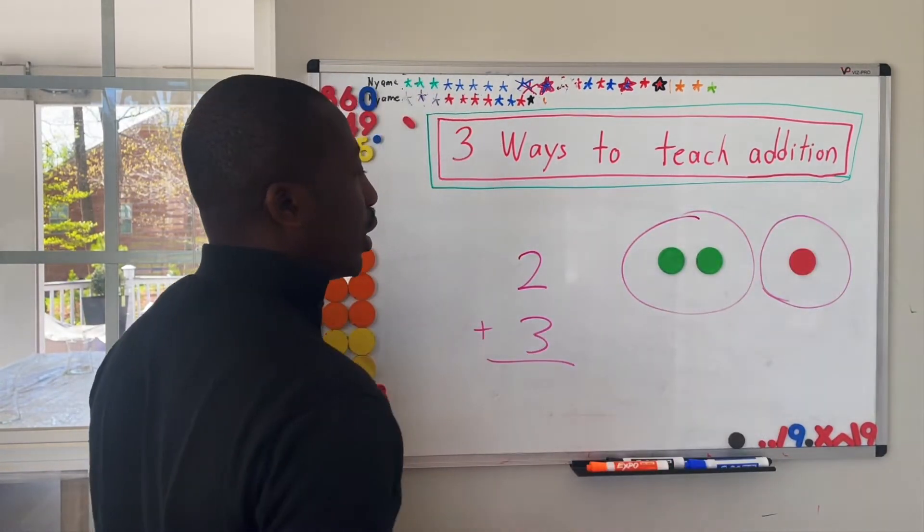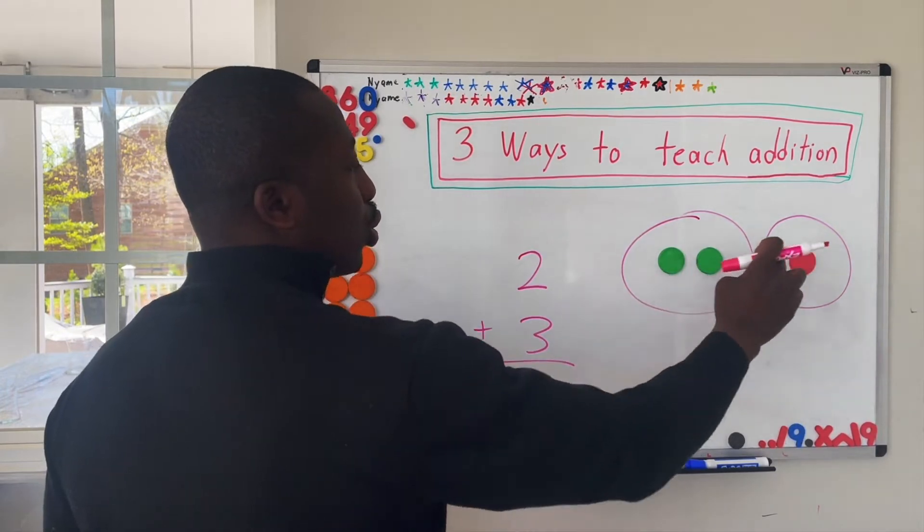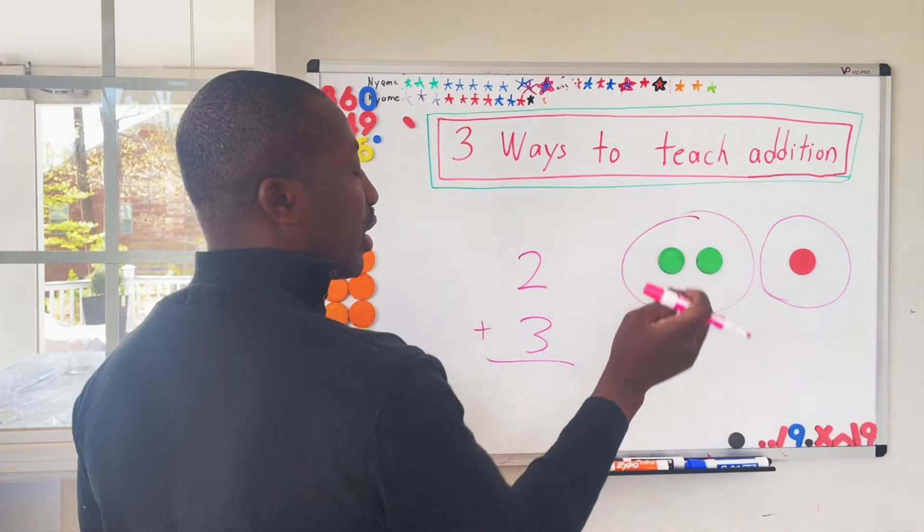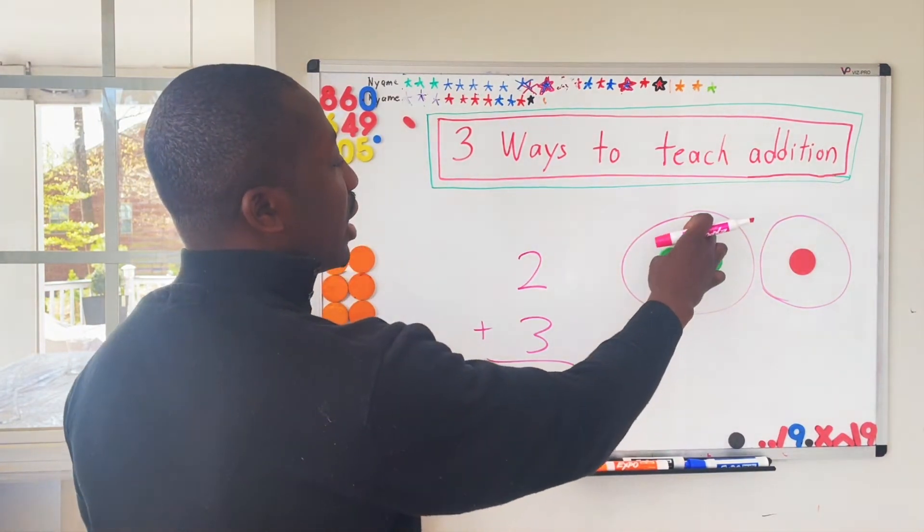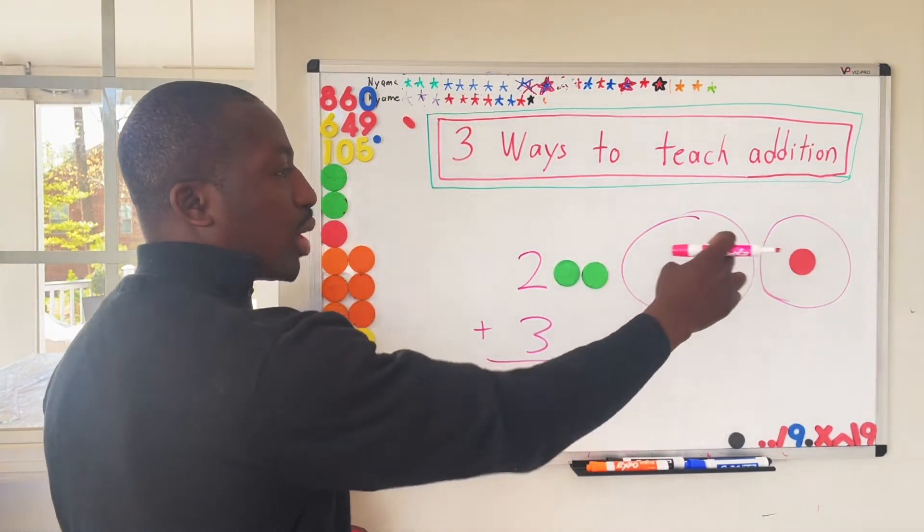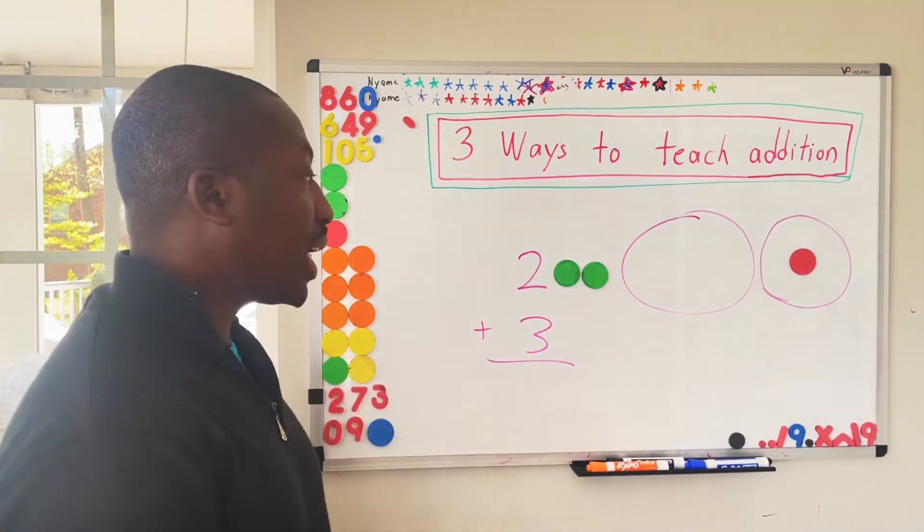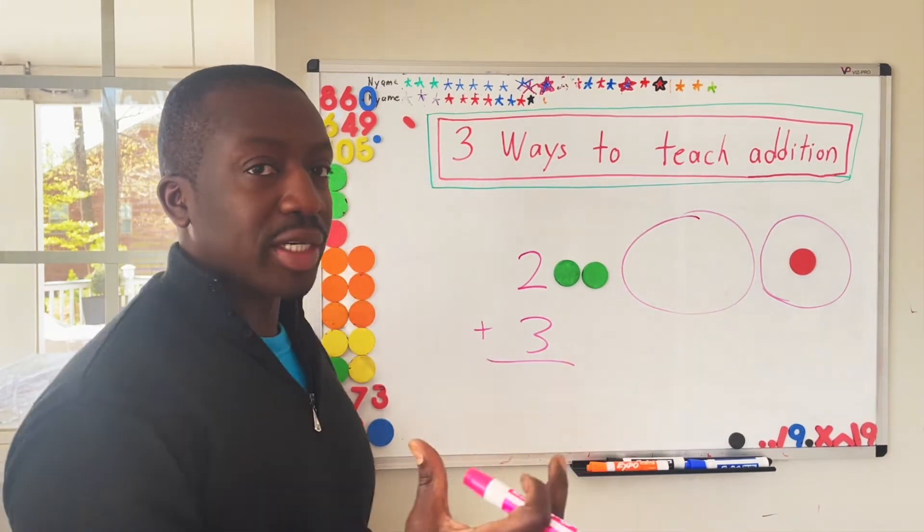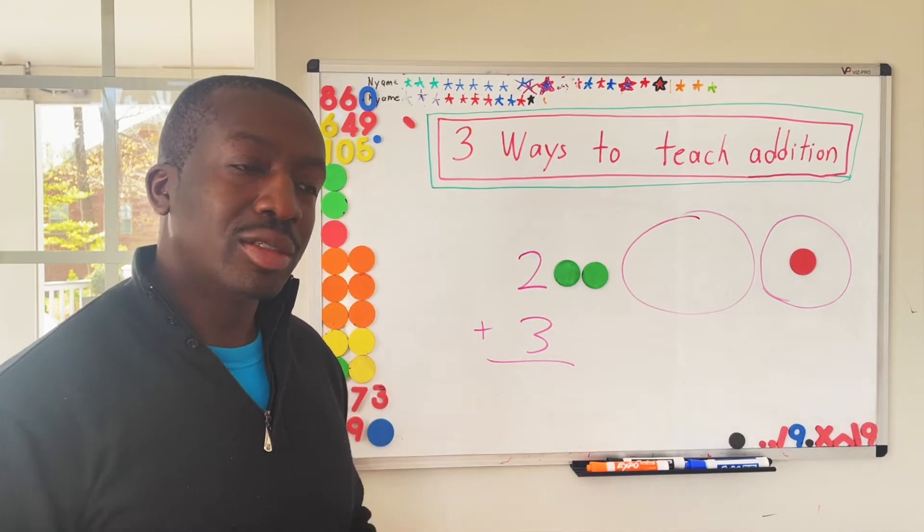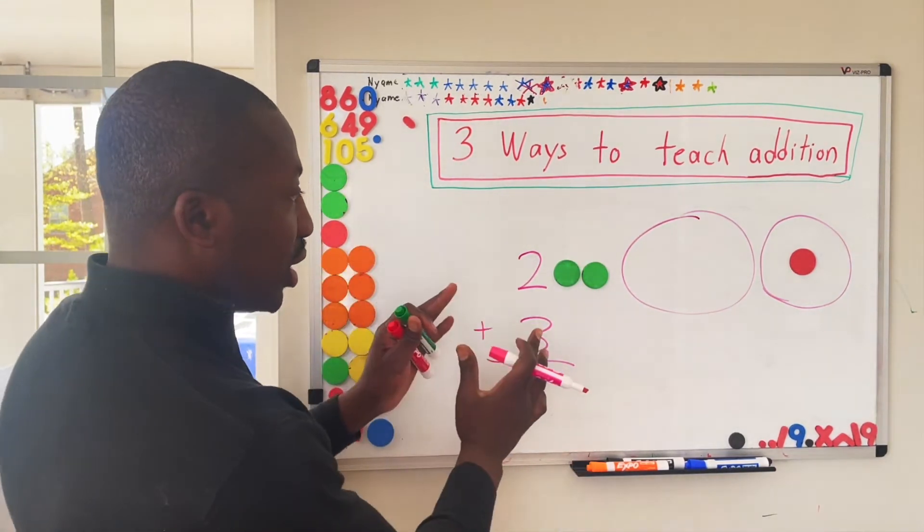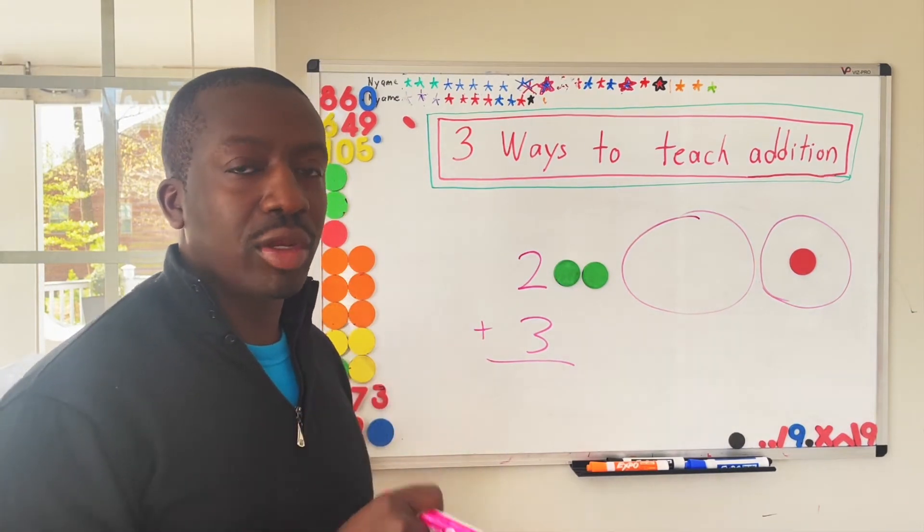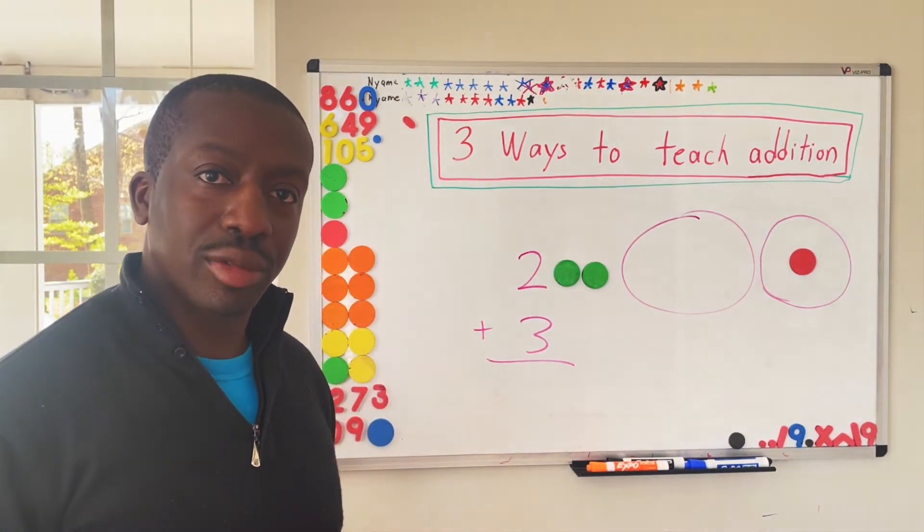And I'll draw circles and I'll say, which circle represents two? If a child can pick out that this represents two, or you can even count one, two, then they have the number correspondence down. If a child can't tell the difference between the one and the two, then their problem is not addition. Their problem is number correspondence in the sense that they don't understand that two corresponds to two objects.